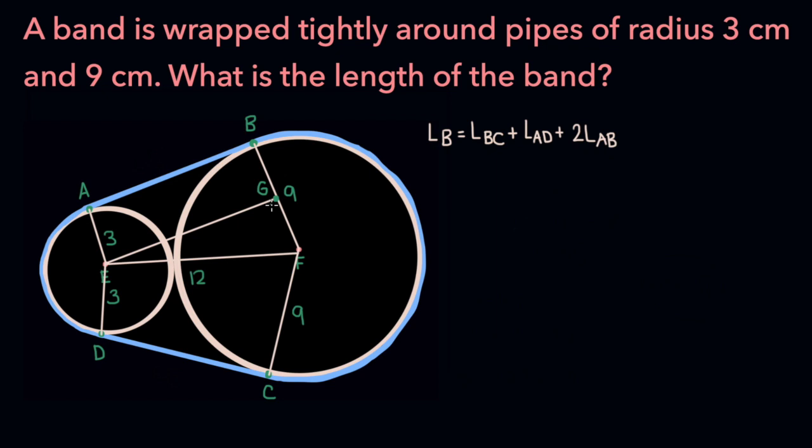And to do this, let's imagine that we can extend the line segment AB in both directions. If you do this, then notice that the line will only touch the smaller pipe at point A and the larger pipe at point B. And so this makes line segment AB tangent to the circles at those particular points.